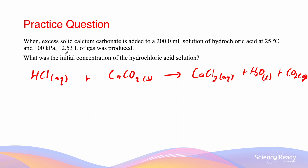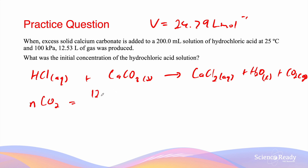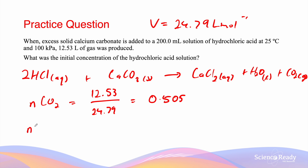We're given that 12.53 liters of gas was produced — the only gas produced is CO₂. The conditions are RTP, so the molar volume is 24.79 liters per mole. The number of moles of CO₂ equals 12.53 divided by 24.79, giving approximately 0.505 moles. After balancing the equation, the molar ratio of CO₂ to HCl is 1 to 2, so the number of moles of HCl equals double the moles of CO₂.